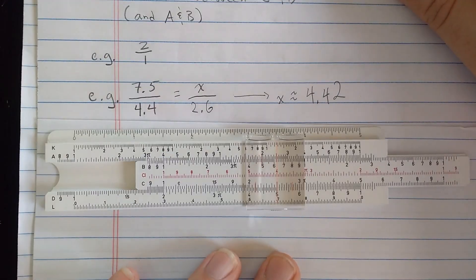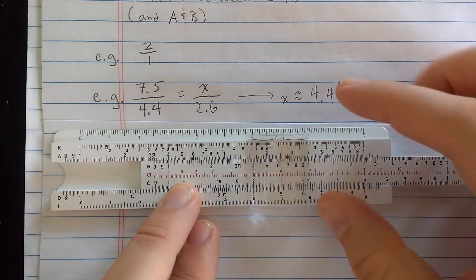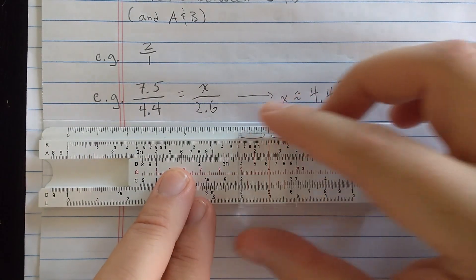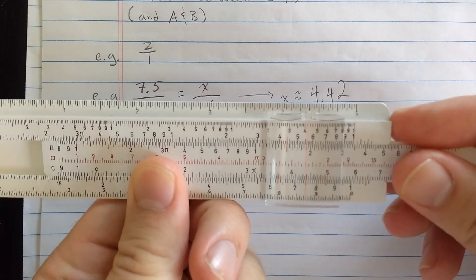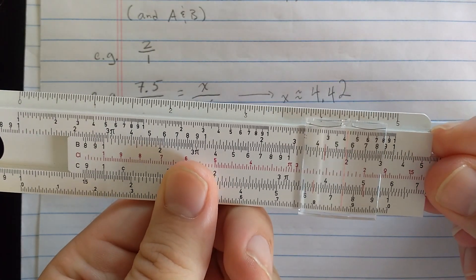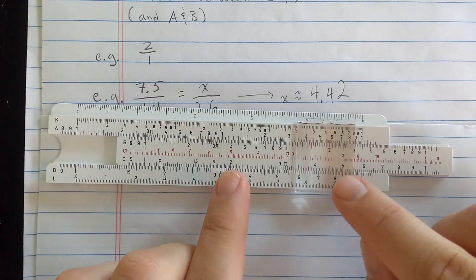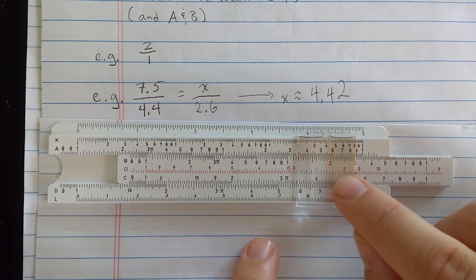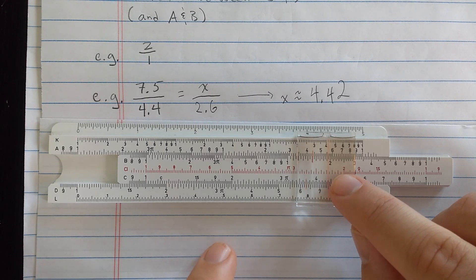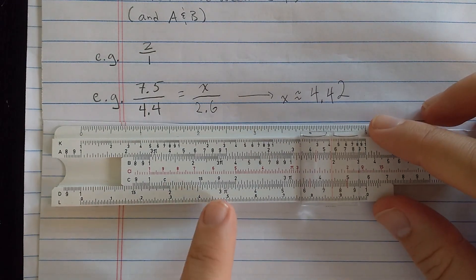Now, the usefulness of this is you can use it to solve proportions. So let's, for example, set proportion 7.5 over 4.4. It's common when you're using the C and the D scales to set it like this. 7.5 on the D and then 4.4 on the C, even though that seems upside down. So I've set proportion 7.5 over 4.4. And the question is, what is that, right? What is x over 2.6 if those are equal fractions?